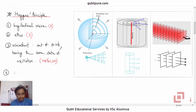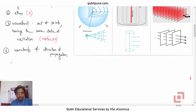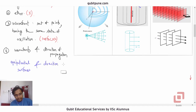The concept of wavefronts and direction of propagation is analogous to equipotential surfaces and the direction of the electric field. They are both perpendicular to each other — the equipotential surfaces are normal to the direction of the electric field.